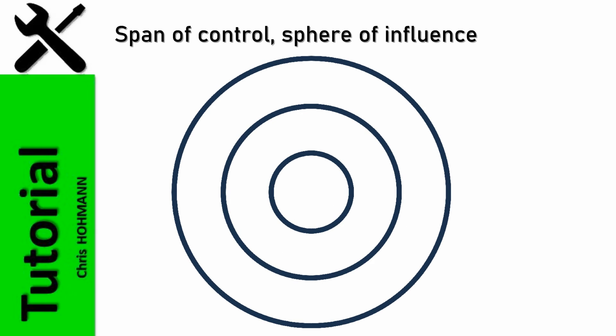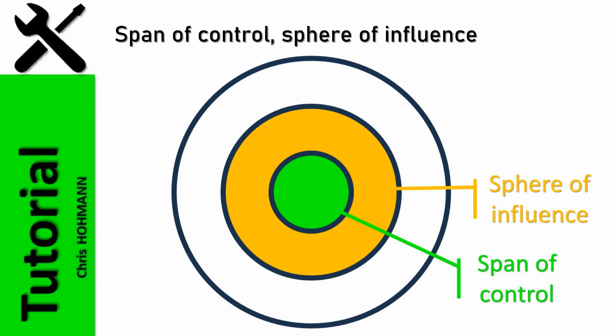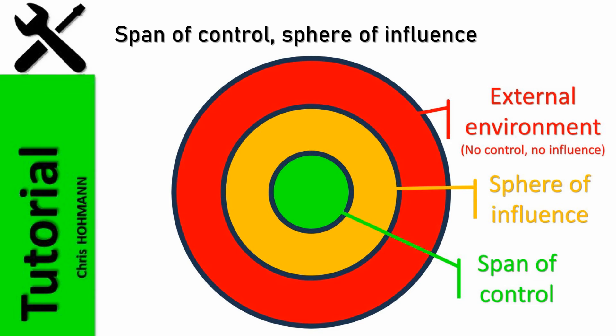If we consider three concentric circles, the first and smallest one is the span of control. This is where we, me, you have authority and can decide and impose changes. The next circle is called sphere of influence. There, we can have some influence but cannot decide nor impose a decision. The last circle is all the external environment on which we, nor me, and not even you, can control or influence anything.